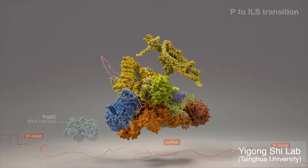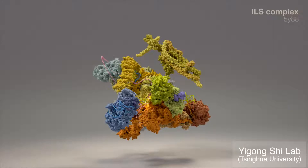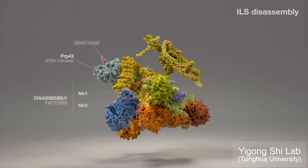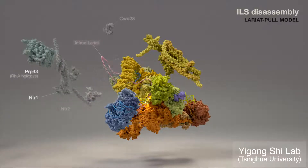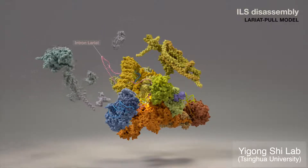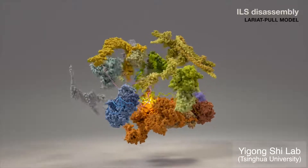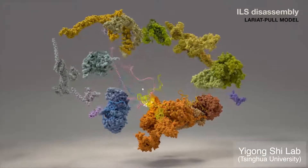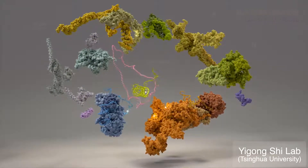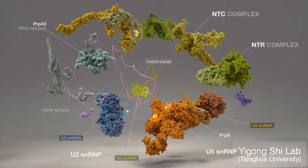The intron lariat spliceosome will be subsequently disassembled by additional RNA helicase machinery, namely PRP43. Recruitment of NTR1 and NTR2 factors selects the spliceosome for disassembly. In one model, PRP43, activated by NTR1, may engage the available intron lariat; pulling may cascade and give rise to forces which dismantle all the components for recycling and their specific functions.